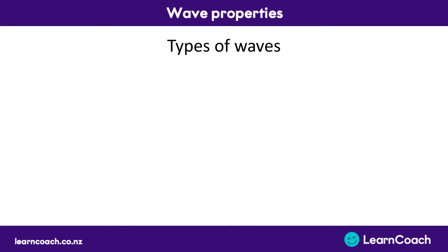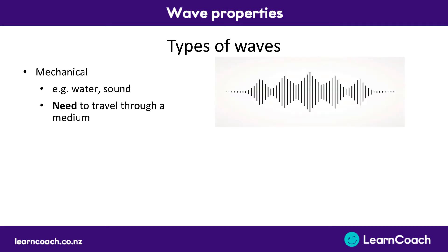Now we're going to look at the different types of waves, and there are two main types. The first are mechanical waves. The waves we see in the ocean, in water, are mechanical waves. Sound is also a type of mechanical wave. The one defining thing about mechanical waves is that they need to travel through a medium, such as water or air. They can't travel without a medium, such as through the vacuum in space.